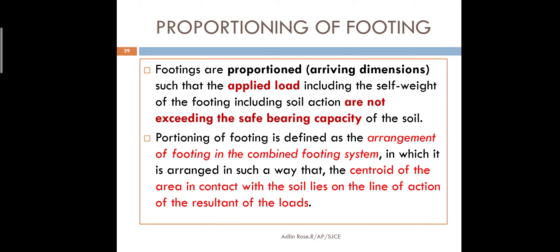In a combined footing, two column loads act together and the resultant load will act at the centroid of the footing - not at the center. Centroid is different from center. In engineering mechanics you would have studied what centroid means. The total load will act at the centroid of the footing, and based on this assumption we arrive at the dimensions. This process is called proportioning of the footing.